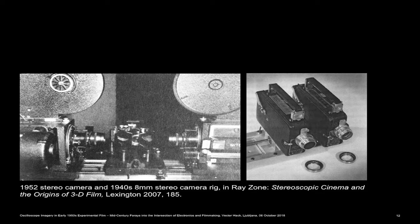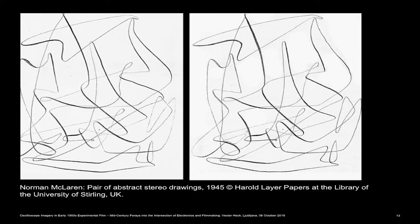Norman McLaren did not use this kind of stereo camera rig. Instead he drew two separate pictures, each corresponding to one eye. These are drawings from the mid 1940s, which was at the peak of his interest in stereo painting and stereo drawing. A quick biographical note: he's from Scotland, where he studied at the Glasgow School of Art. Then in the second half of the 1930s, he worked at the General Post Office Film Unit in London.